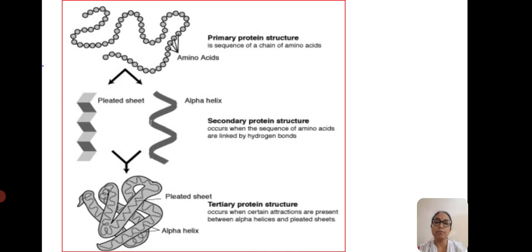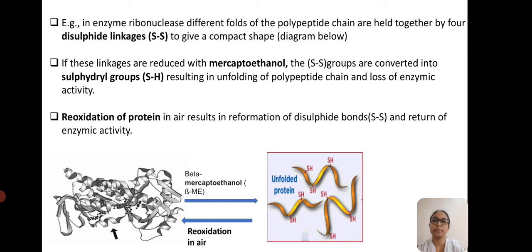There will be either disulfide or hydrogen bonds which help in the formation of the globular tertiary structure, which is very much important for the functional enzymatic proteins. We can take an example here — the enzyme ribonuclease. Different folds of polypeptide chains are held together by four disulfide linkages or disulfide bonds to give a compact shape to the enzymatic protein. If these linkages are reduced by a reducing agent like mercaptoethanol, then the compact three-dimensional tertiary structure of the protein will be depleted.